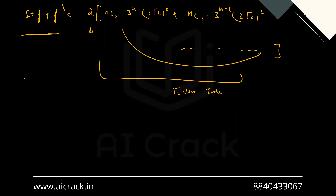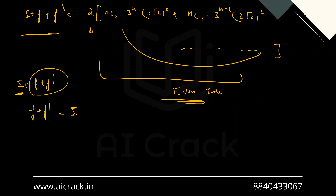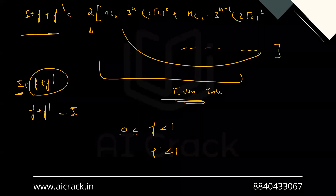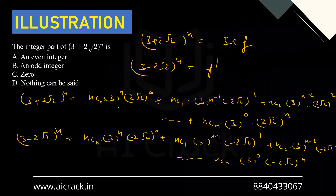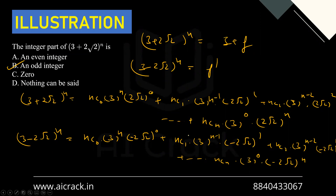Now f < 1 and f' < 1, and both are greater than 0, so f + f' must equal exactly 1. Therefore I + 1 = even integer, which means I = even - 1 = odd integer. So the integer part of (3+2√2)^n is always an odd integer. This is the standard process for solving this type of question.